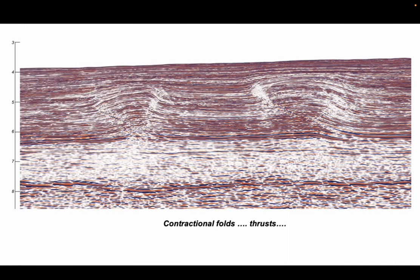Right, let's step back. So by applying the regional concept, we deduce that these structures on the profile are contractional folds and the faults associated with them will be thrust faults.